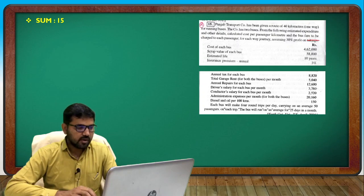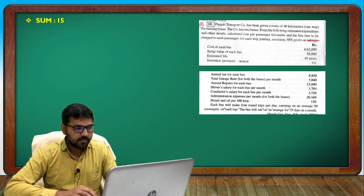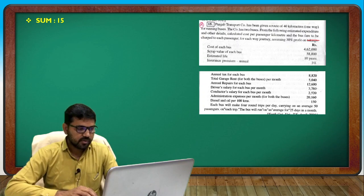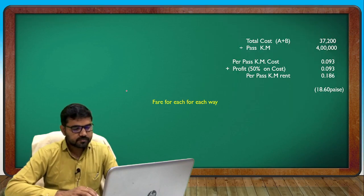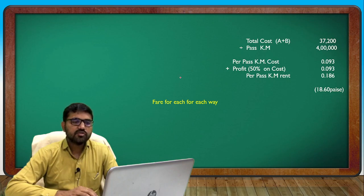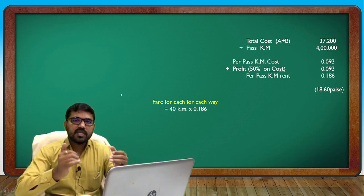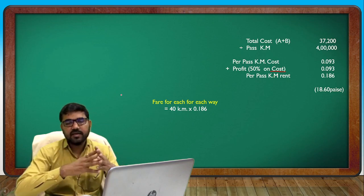Since it is profit on takings, not on cost, you directly add profit to cost. So total with 50% profit on cost gives the fare. The question has error: 0.186 per passenger kilometer fare.